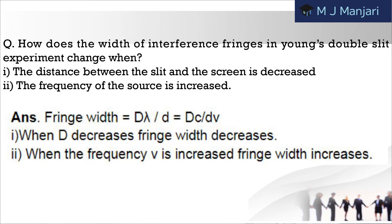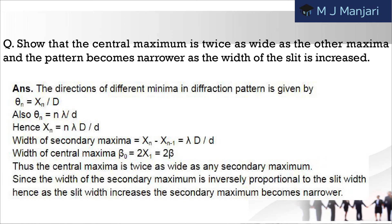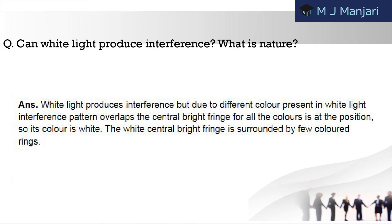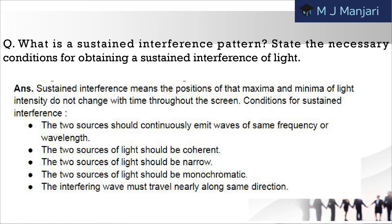Next: how does the width of interference fringes in Young's double slit experiment change when: 1) the distance between the slit and screen is decreased, and 2) the frequency of the source is increased? Next: show that the central maxima is twice as wide as the other maxima, and the pattern becomes narrower as the width of the slit is increased. Next: does the appearance of bright and dark fringes in the interference pattern violate conservation of energy? Explain. Next: can white light produce interference? What is its nature? Next: what is a sustained interference pattern? State the necessary conditions for obtaining sustained interference of light.